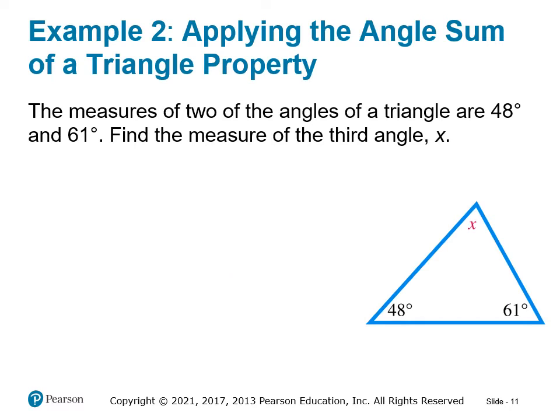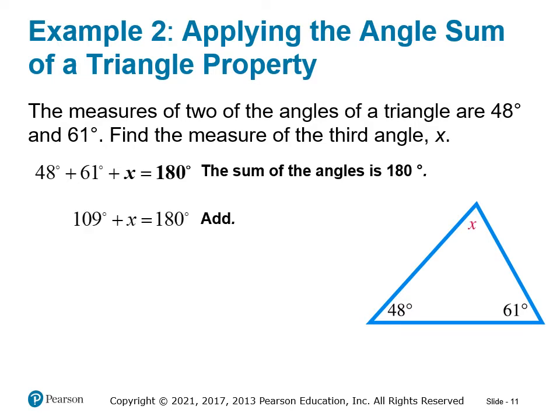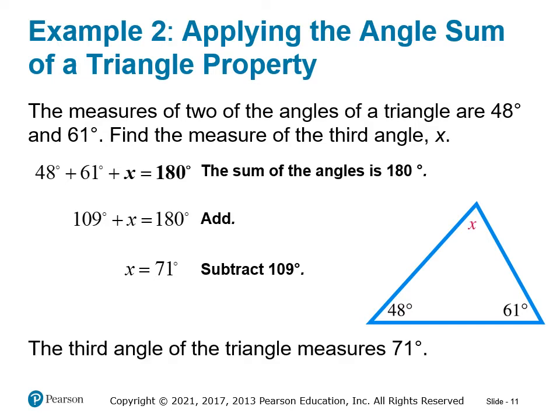Applying the angle sum property of a triangle: we're given a triangle with two angles identified — 48 degrees and 61 degrees — and we need to find the measure of the third angle. We plug them in: 48 + 61 + x = 180, and solve for x. We get x = 71, so the third angle measures 71 degrees.